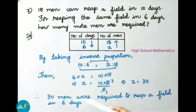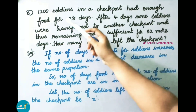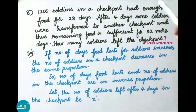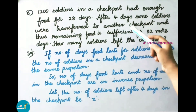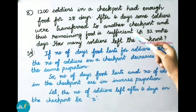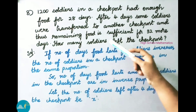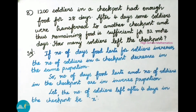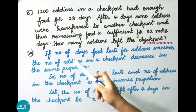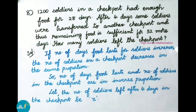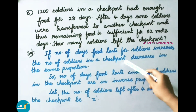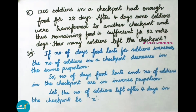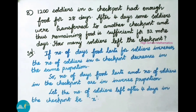Therefore, 30 men were required to reap a field in 6 days. See now question number 8. 1,200 soldiers in a check post had enough food for 28 days. After 4 days, some soldiers were transferred to another check post and thus the remaining food is sufficient for 32 more days. How many soldiers left the check post? Let us see the solution. If number of days food lasts for soldiers increases, then the number of soldiers in a check post decreases in the same proportion. So, number of days food lasts and number of soldiers in the check post are in inverse proportion.